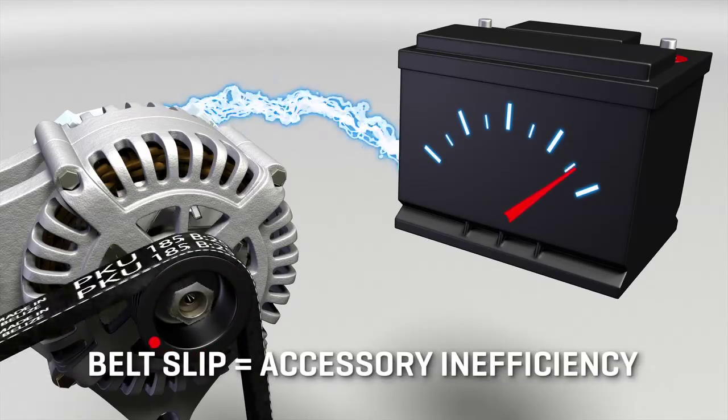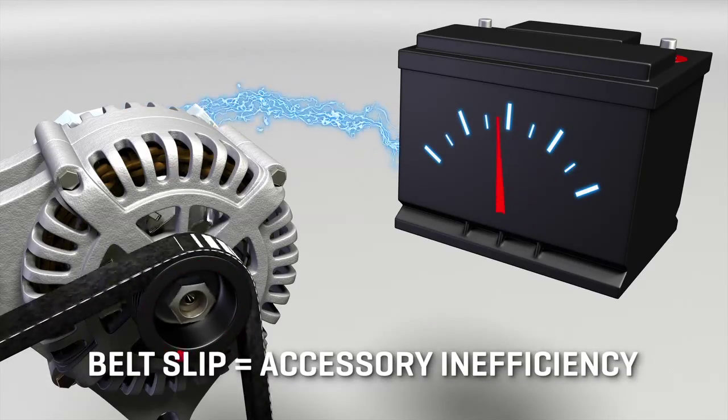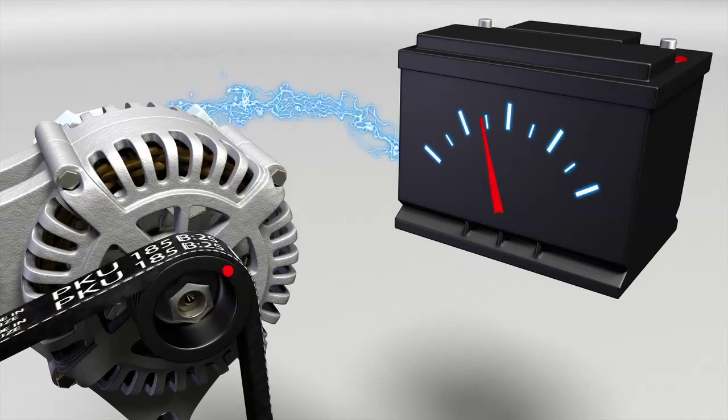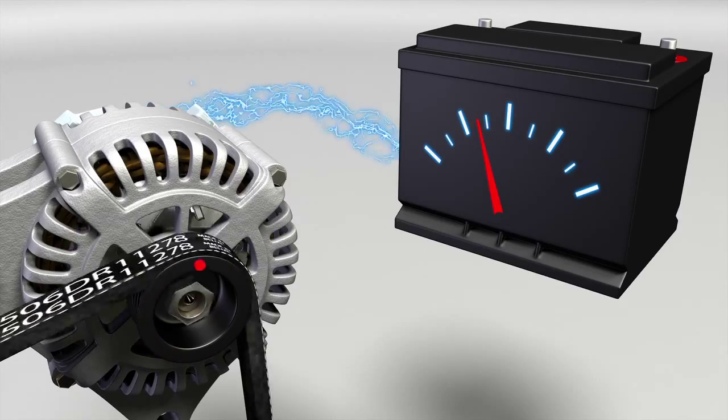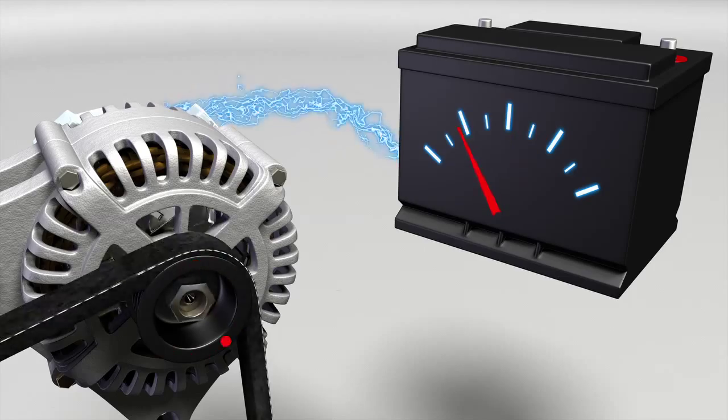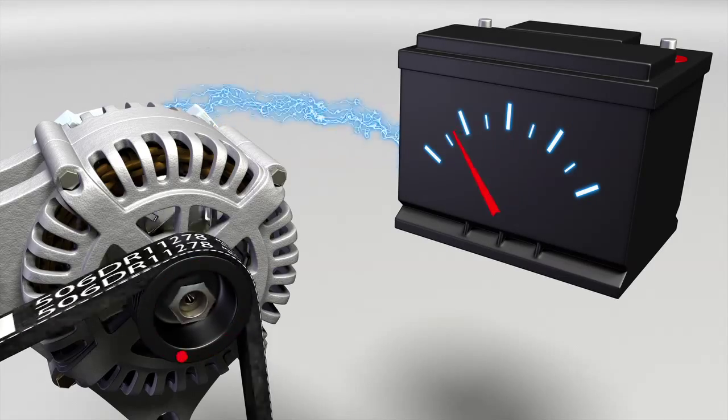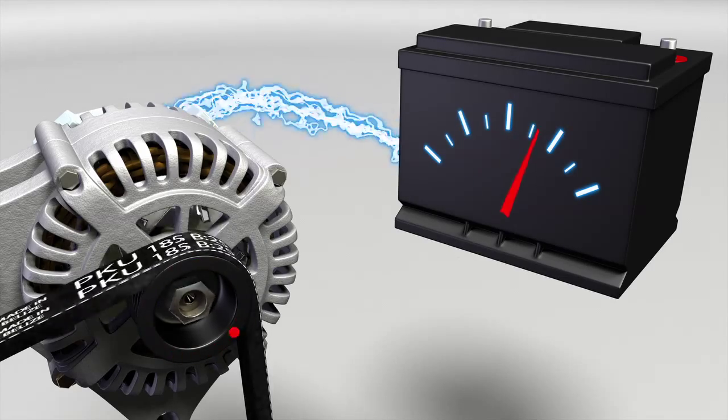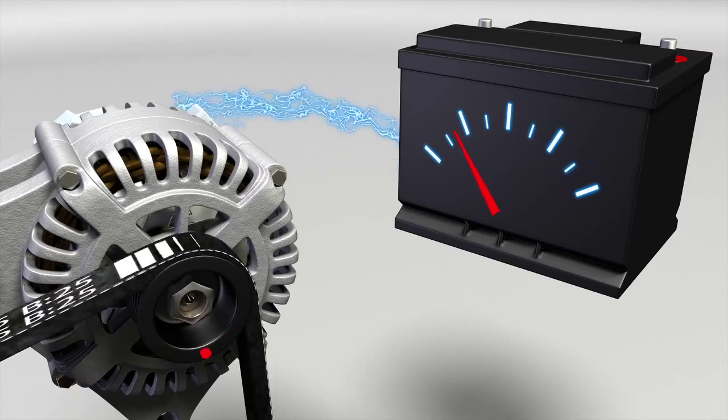As the belt slips, all of the accessories can be affected. The amount of electricity produced by the alternator will fluctuate with belt slip. This may lead the driver to think they have a bad battery or alternator when the problem is actually a worn belt or tensioner.